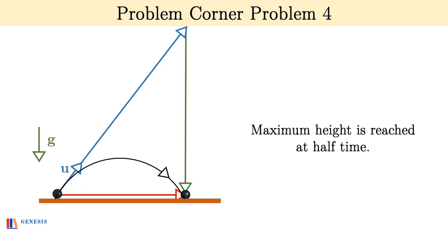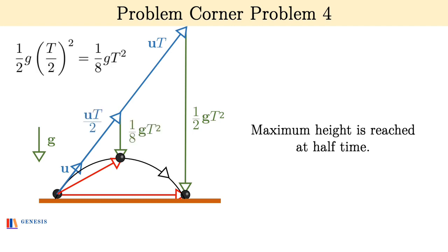How would the vector triangle look like? The gravitational displacement will be ½g(T/2)² or ⅛gT². So now look at this triangle along with the last triangle that will be formed.